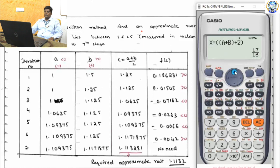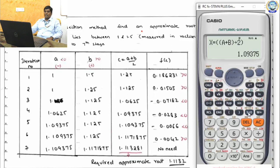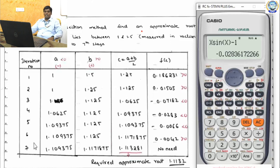Iteration 4: a = 1.0625, b = 1.125. Average c₄ = 1.09375. Substitute x = 1.09375 into x·sin(x) − 1; result is approximately −0.0283, which is negative. So replace a: set a = 1.09375; b remains 1.125.